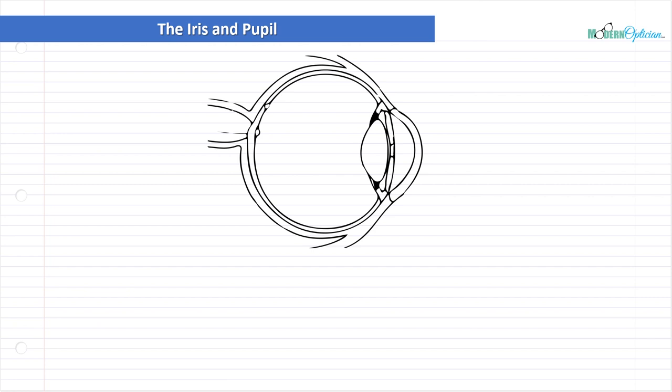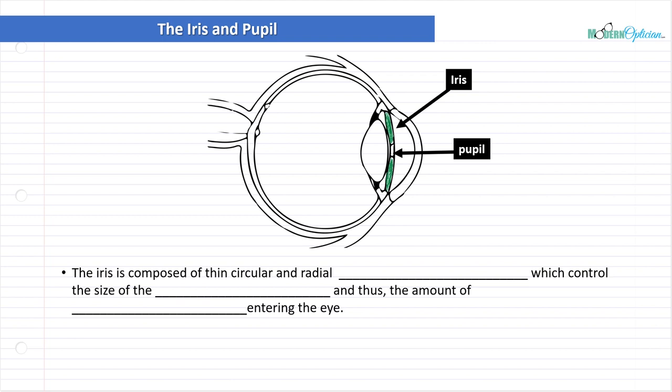Let's pull up the cross-section of the eye and look at the location. Highlighted in green here is the iris, and of course at the center is the pupil — yes, it is just a hole, not actually a structure, but they go hand in hand. The iris itself is composed of thin circular and radial muscles, which control the size of the pupil and thus the amount of light entering the eye. This is basically the entire purpose of the iris: to control how much light enters the eye.